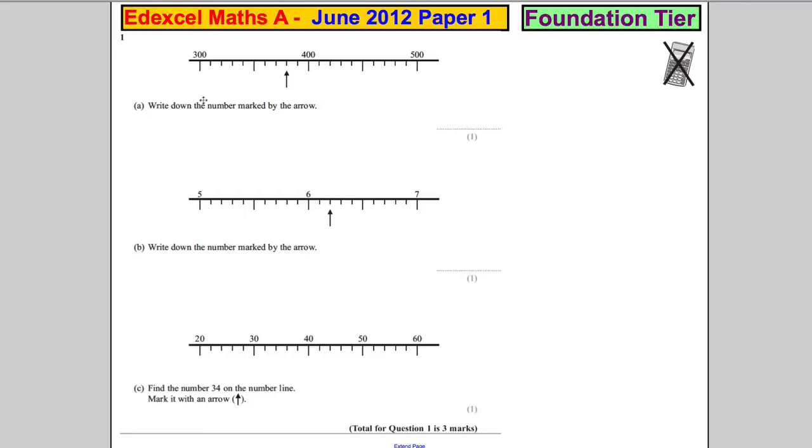For question one, we've got a number line and we're asked to write down the number marked by the arrow. Here we've got 300 and here we've got 400, with one, two, three, four, five, six, seven, eight, nine, ten divisions. So each one must be worth 10. This here is 350, 360, 370, 380. So that's 380.